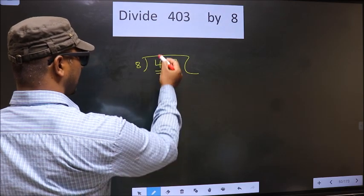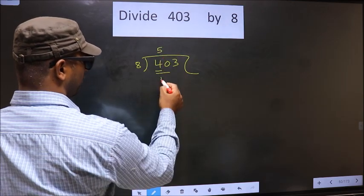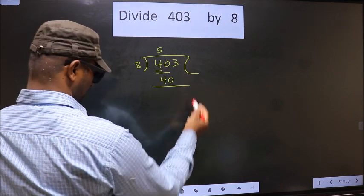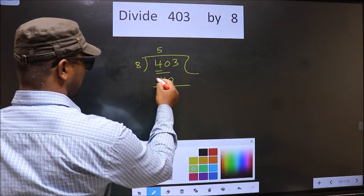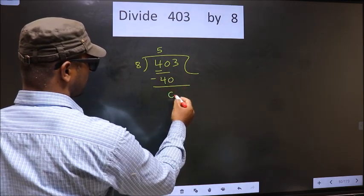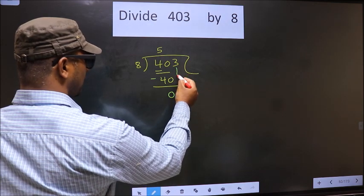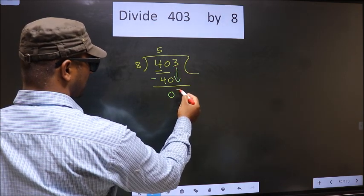When do we get 40 in 8 table? 8 times 5 is 40. Now you subtract. 40 minus 40 is 0. Now we bring down the beside number, that is 3 down.